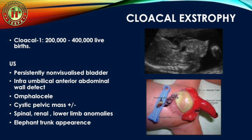Cloacal exstrophy is a still rarer condition. Persistent cloaca occurs due to failure of the urorectal septum to divide the cloaca into the anterior urinary bladder and posterior rectum. In the presence of a lower anterior abdominal wall defect, cloacal eversion leads to cloacal exstrophy. On ultrasound, the bladder is not seen; there is an infraumbilical mass formed by the everted cloaca along with an omphalocele. Spinal, renal, and lower limb anomalies are associated.